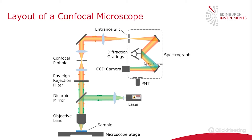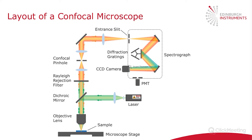The light that has now been separated into its constituent wavelengths then passes on as an image using a mirror onto a CCD camera. The CCD camera allows you to acquire the full spectrum in a single shot, and for both photoluminescence and Raman steady-state measurements, you would use the CCD camera.